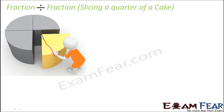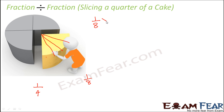You have to cut the slices such that each slice is one eighth of the total cake. This part of the cake is one fourth, and we want to cut it into slices where each slice is one eighth of the total cake. If we let x be the number of slices, then one eighth multiplied by x should equal one fourth.